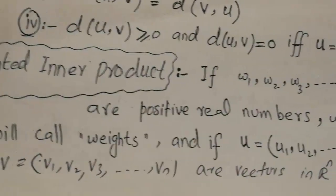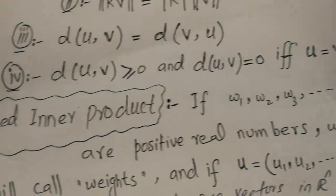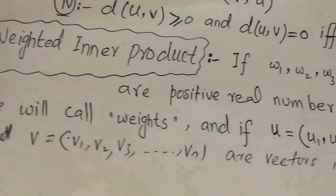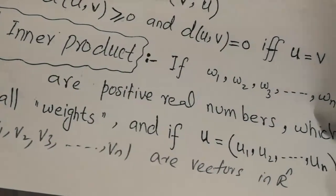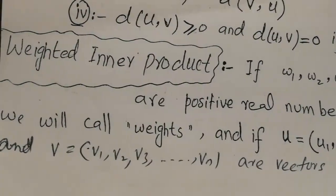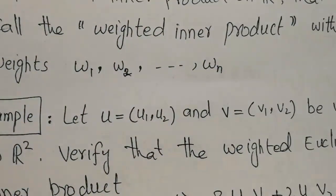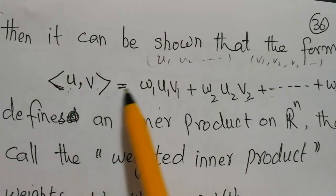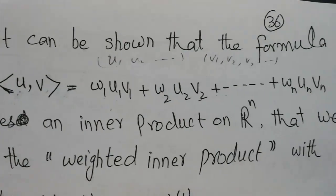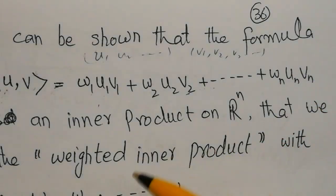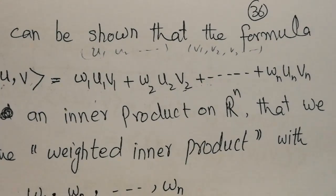Formally, if w1, w2, ..., wn are positive real numbers called weights, and u = (u1, u2, ..., un) and v are vectors, then the expression combining each pair of components multiplied by the corresponding weight is called the weighted inner product. The inner product is not just restricted to vectors — we can extend the idea, for example to matrices.